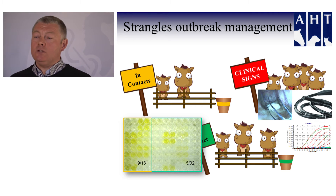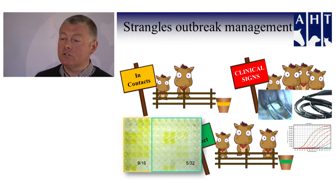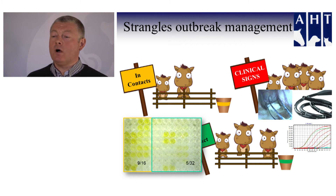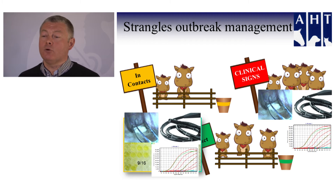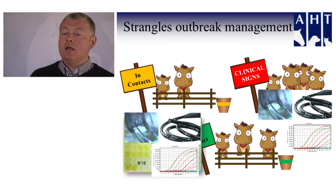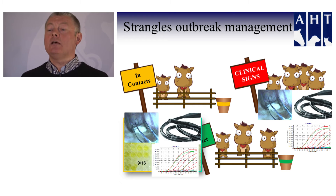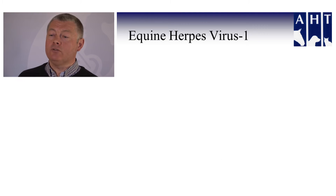We then have to screen animals in the red group to see if they're harbouring this infection within their guttural pouches. This requires these animals to be endoscoped, samples collected, and submitted to the laboratory for testing. Any animals with suspicious blood tests should similarly be screened, because you could have silent carriers sitting within the other two groups. It's important to identify and treat them appropriately.